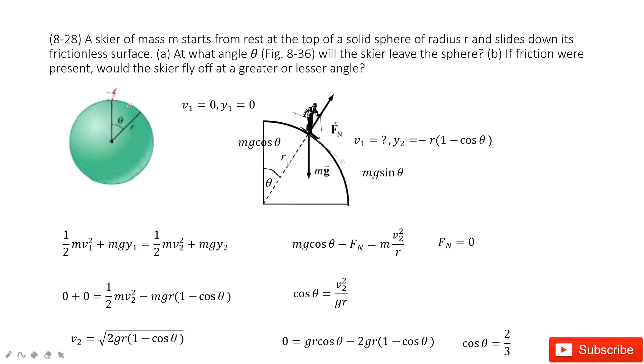So how can we solve this problem? We can draw a picture like this one. At the initial position, we know the initial velocity is zero. And then we take this one as a reference point.